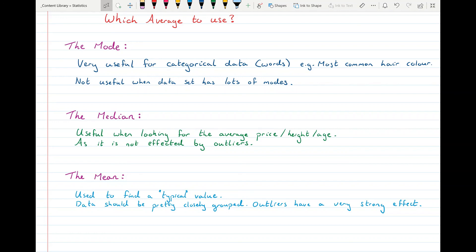And then the mean is quite useful if you're looking for a typical value. So like we said earlier, if you're going into the shop, a typical value of how much you might spend or something like that. So it's very useful when the data is closely grouped around itself and there's not really any outliers involved in the data. Everyone's spending around the same, the mean will be a very good average to use.